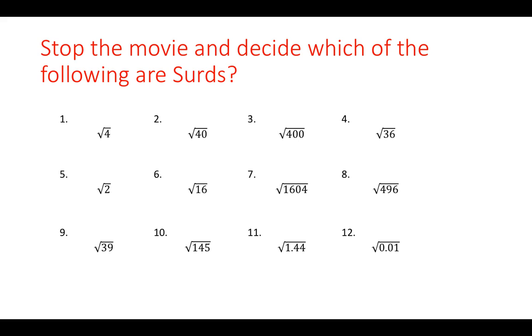Okay, hopefully you've had a bit of time to chat amongst yourselves and work out which are not surds. So, number 1, root 4, gives the answer 2, so that's not a surd. Number 2, the square root of 40, gives a large decimal answer, so it is a surd.